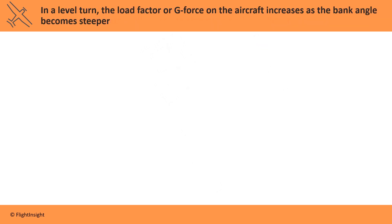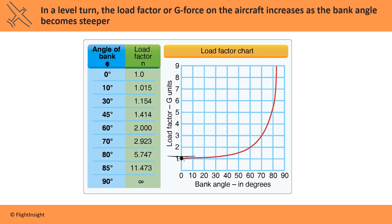On the test, you'll be asked to calculate the load factor on the aircraft for a given bank angle in a level turn. You'll be using the figure here to determine the answers. In a level turn, the load factor, or G-force, increases as the bank angle becomes steeper. For example, at a 60-degree bank, the load factor is doubled. You can find this load factor of 2 either by reading it across the graph on the vertical axis, or using the chart on the left side and matching the 60-degree bank angle with a load factor of 2.